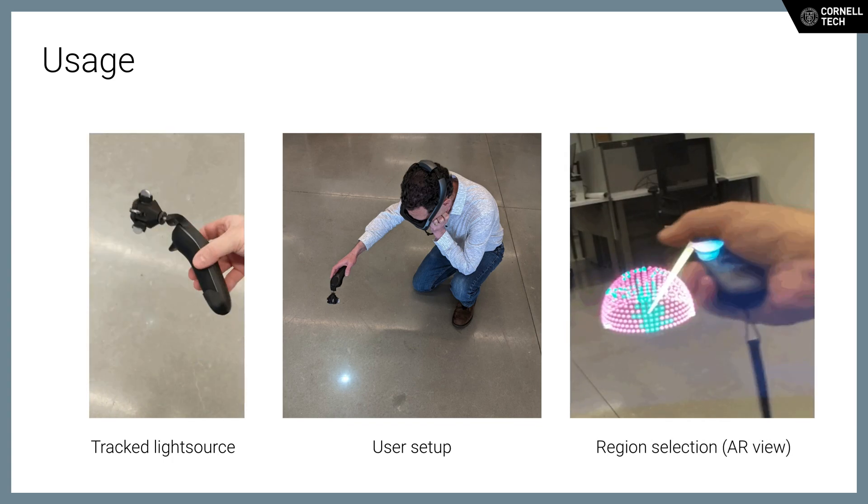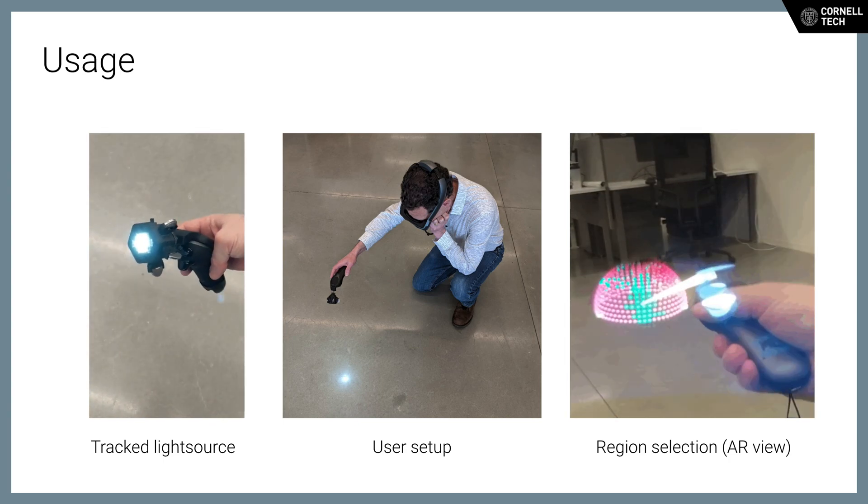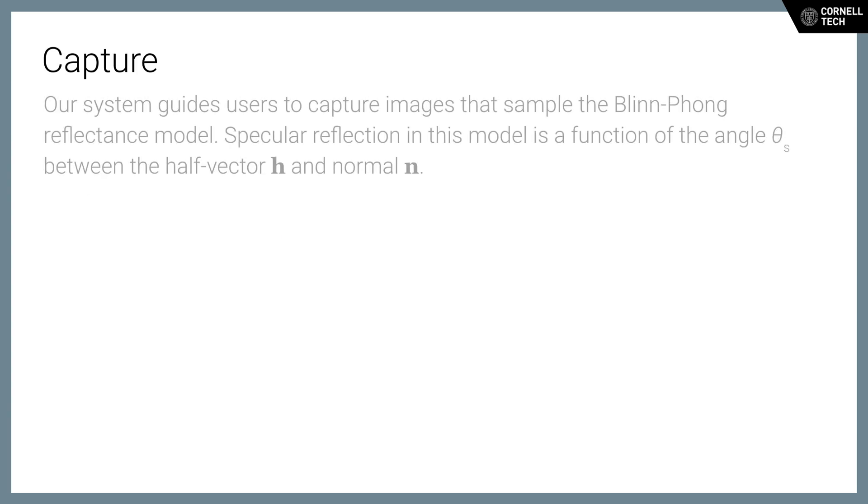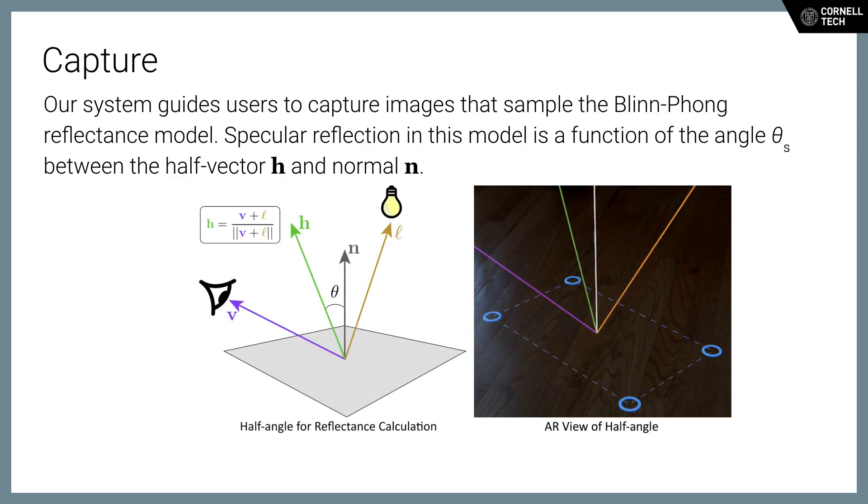The first step of the AR-guided capture process is to select a region of interest on a planar surface. Then, the system guides users to capture images that sample the Blinn-Phong reflectance model. Blinn-Phong models reflectance as a combination of diffuse and specular components.